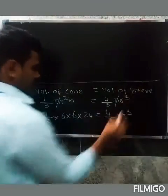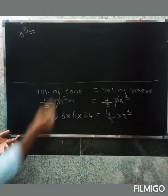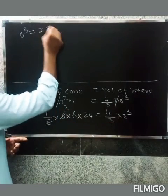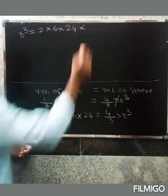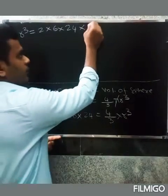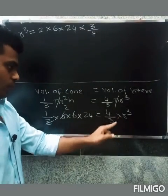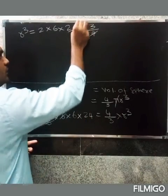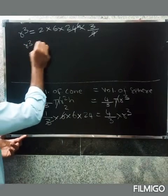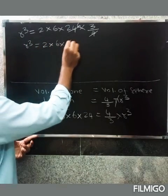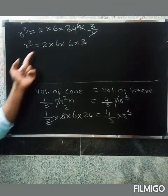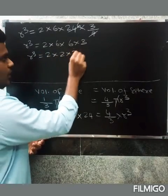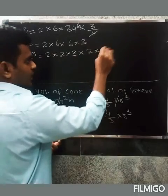Simplifying: the threes cancel. So r cubed equals two into 6 into 24, then multiplying by three-fourths. The four-thirds becomes three-fourths when moved to the other side. So r cubed equals two into 6 into 6 into 6 into three.